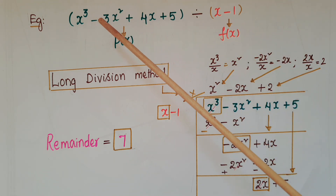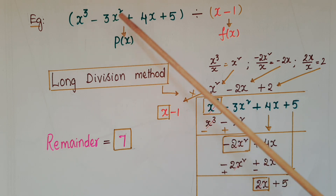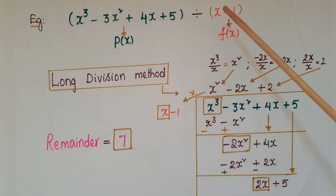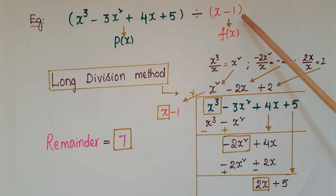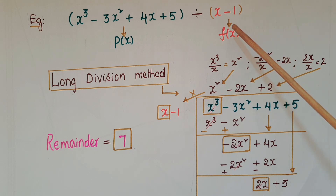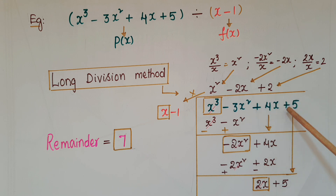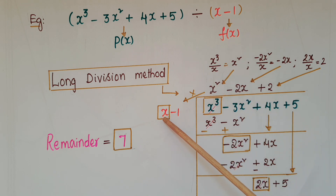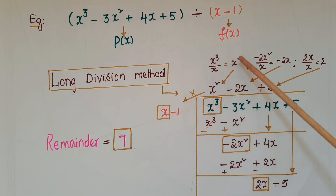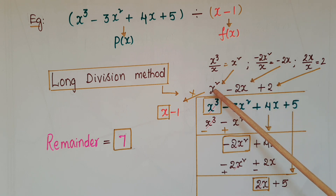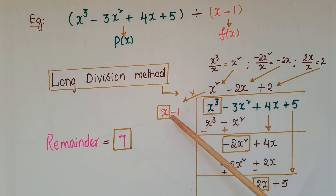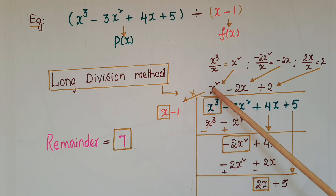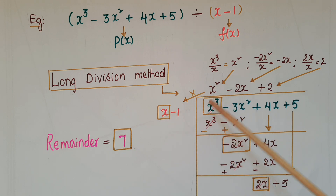So here x³ - 3x² + 4x + 5 is a polynomial divided by x - 1, which is also a polynomial. First, write x³ - 3x² + 4x + 5 here and write x - 1 here. See the first term, that is x³. So x³ divided by x is equal to x², so write x² at the quotient place and multiply x² with x - 1. Then x² × x = x³ and x² × (-1) = -x².